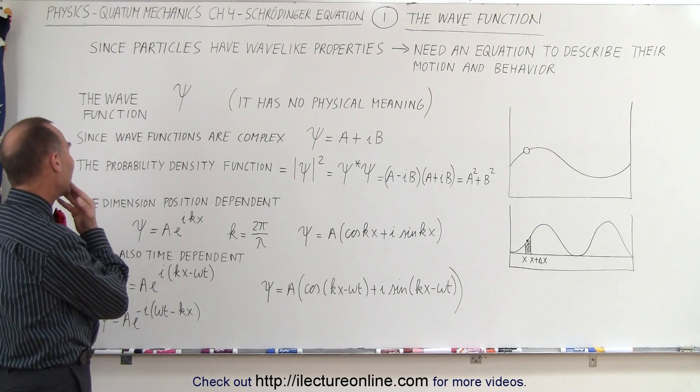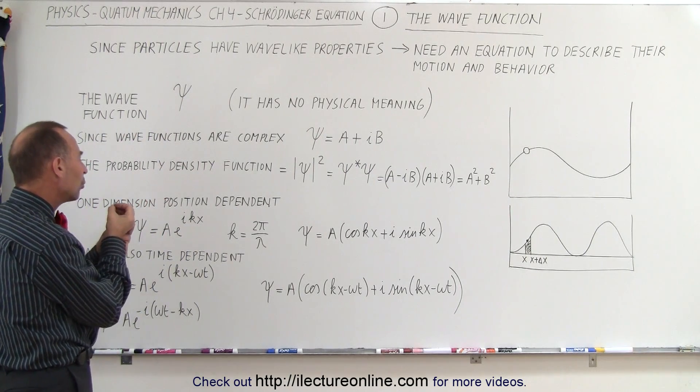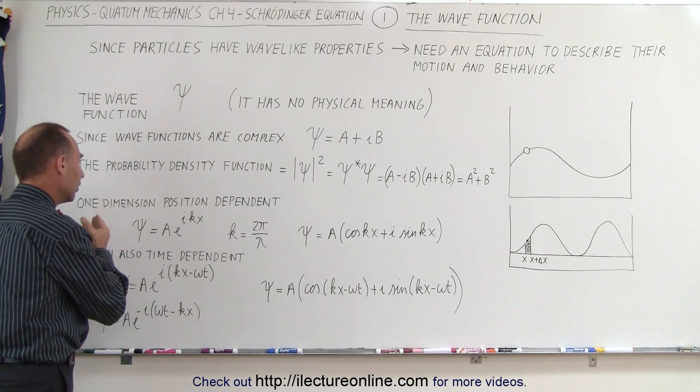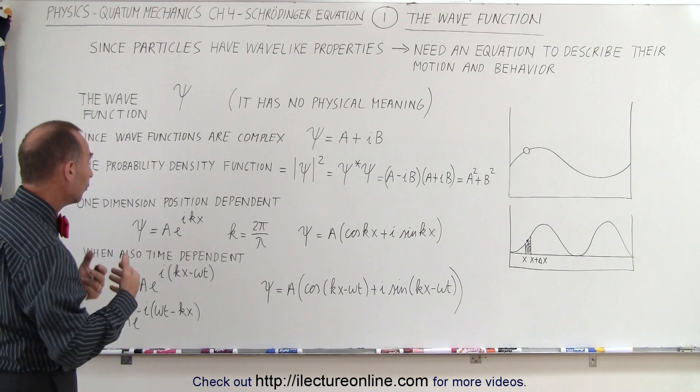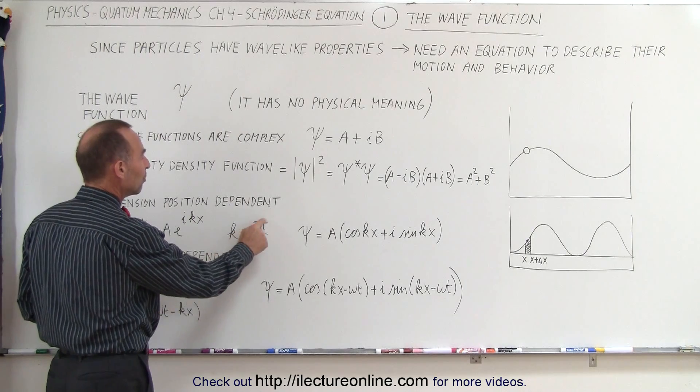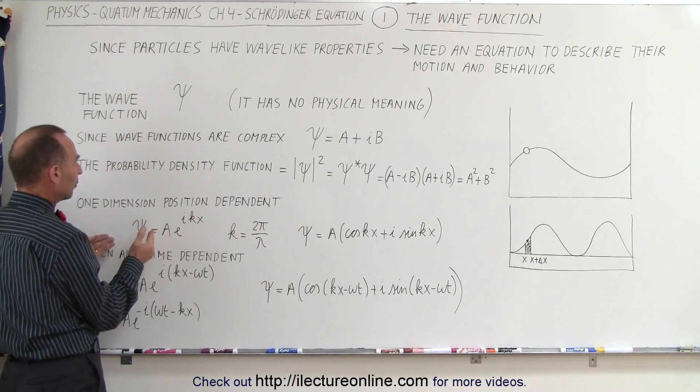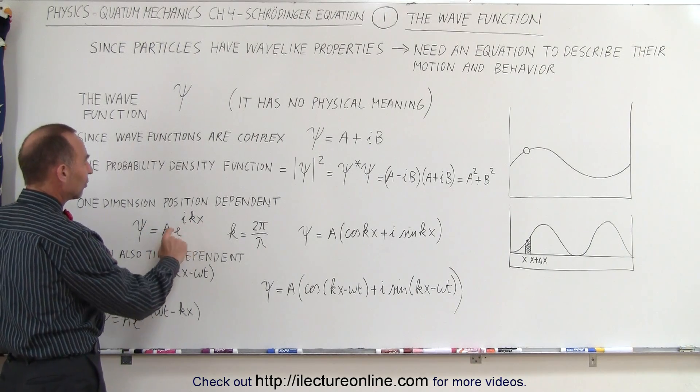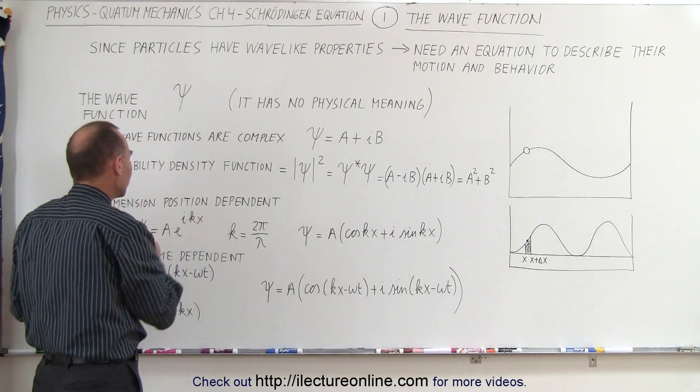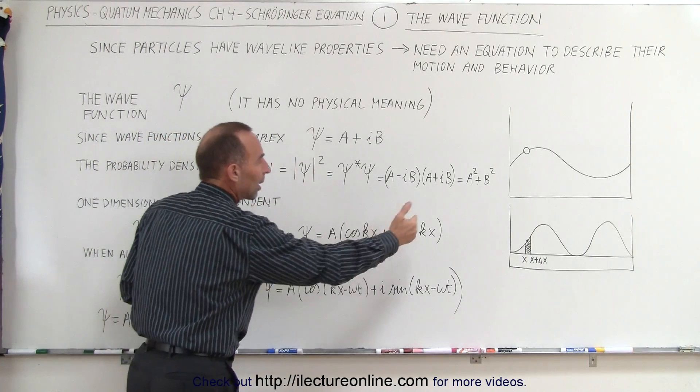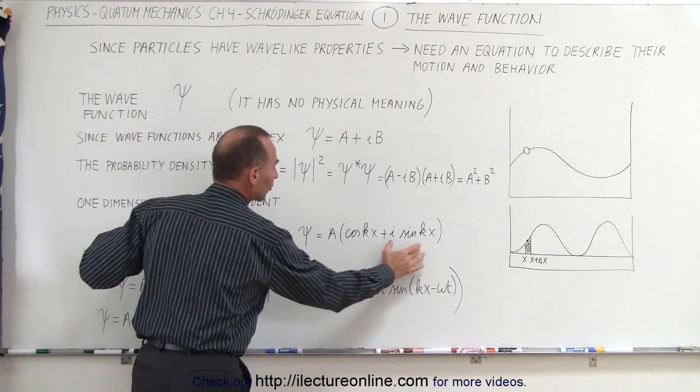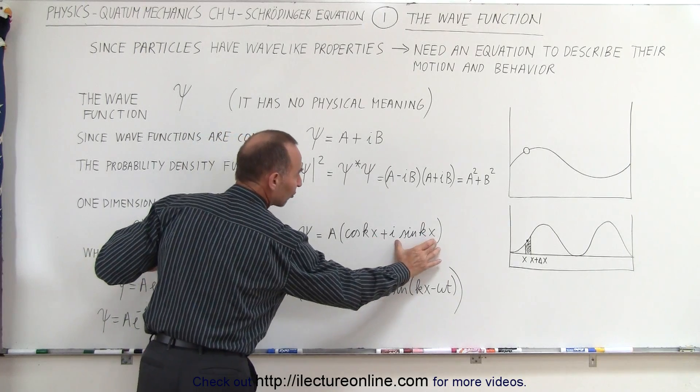We also had to have something that could describe the wave function in terms of position, and then in terms of time. Going back to the typical equation for wave functions, we knew that it had a concept of kx in there. k is the wave number, which is 2π over the wavelength λ. So the wave function could take on the form of some amplitude times e^(ikx). Remember that this amplitude is part of a wave function that has no physical meaning. The physical meaning only comes in when we square the function and get the probability density function. If we expand this into the sines and cosines, it has a real part and an imaginary part.